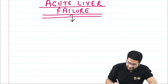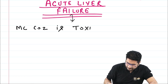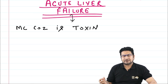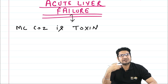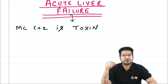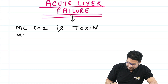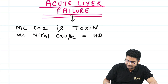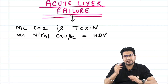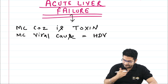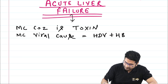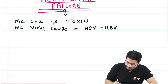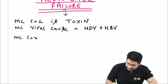The most common cause of acute liver failure is toxins — not any virus. Many patients accidentally or intentionally ingest toxins as a suicidal attempt. The most common viral cause is hepatitis D virus (HDV) in combination with hepatitis B virus (HBV). HDV plus HBV infection is particularly common.